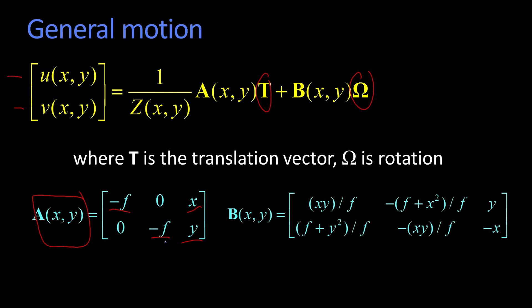So you'll notice that A is just this function. B is a little more complicated, but it is still just a set of things we know. So if you tell me some point and you tell me the focal length, I can tell you this A matrix and this B matrix. I might not know T and omega; I might be wanting to solve for T and omega. But A and B, I know everything of.